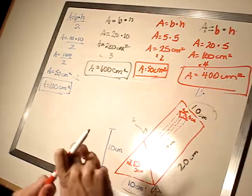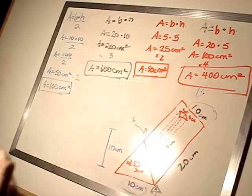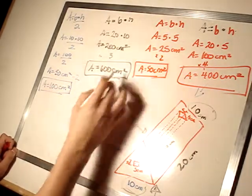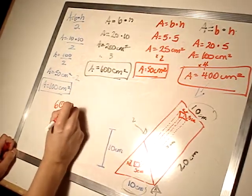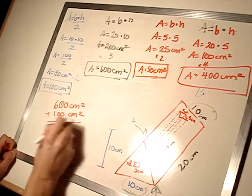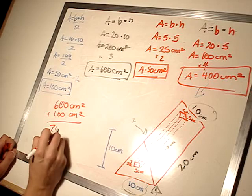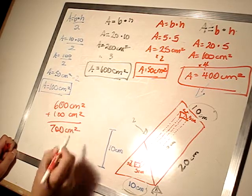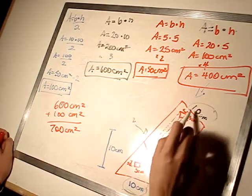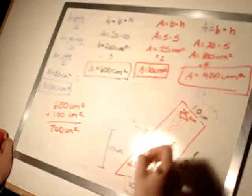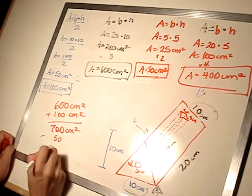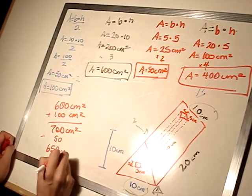Now, we have to put all this together. So, how do we do that? Well, first, let's take all this side. 600 centimeters squared plus 100 centimeters squared gives us 700 centimeters squared. But now, we have to take away the two squares on either end. So, minus 50 gives us 650 centimeters squared.